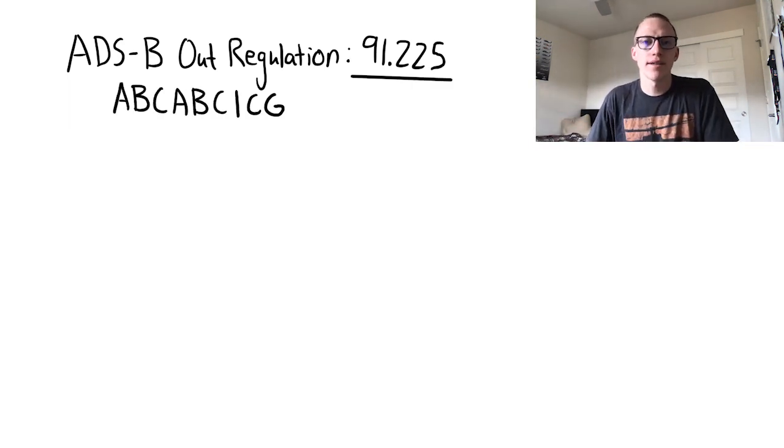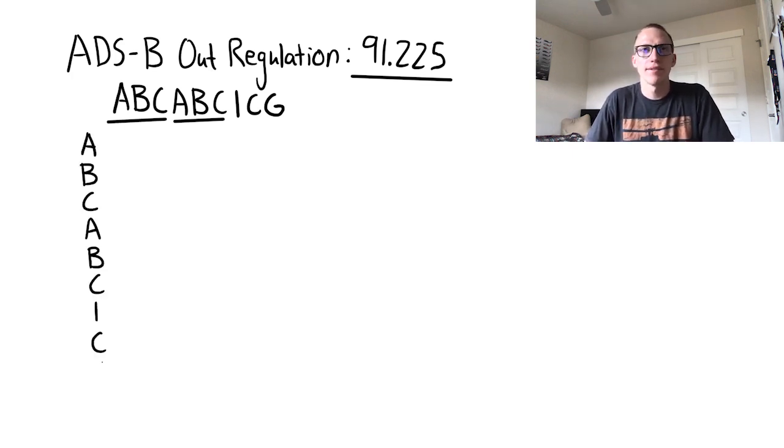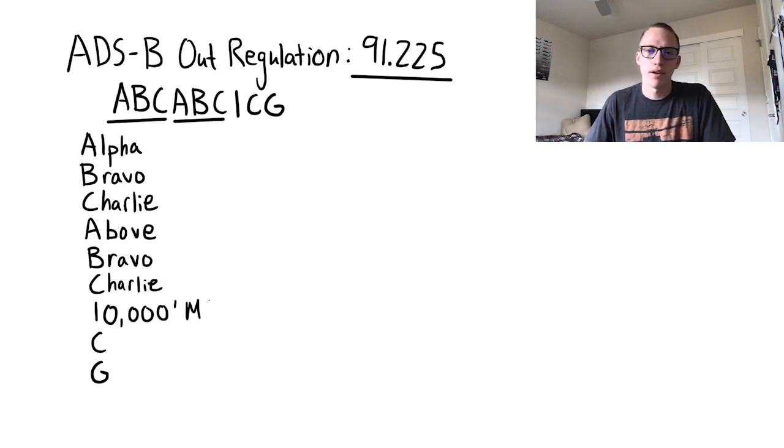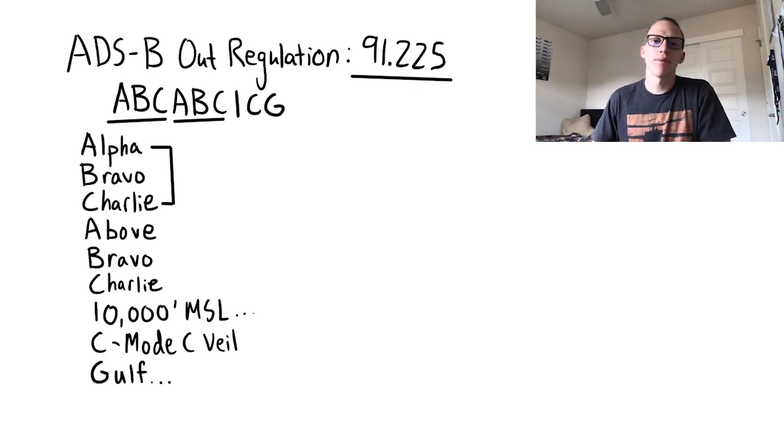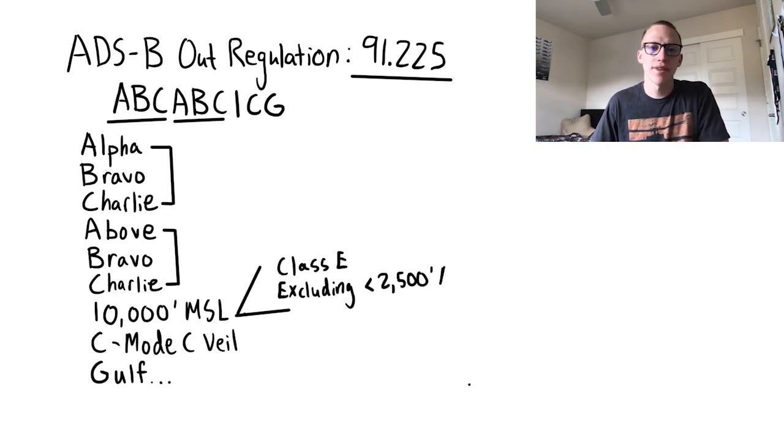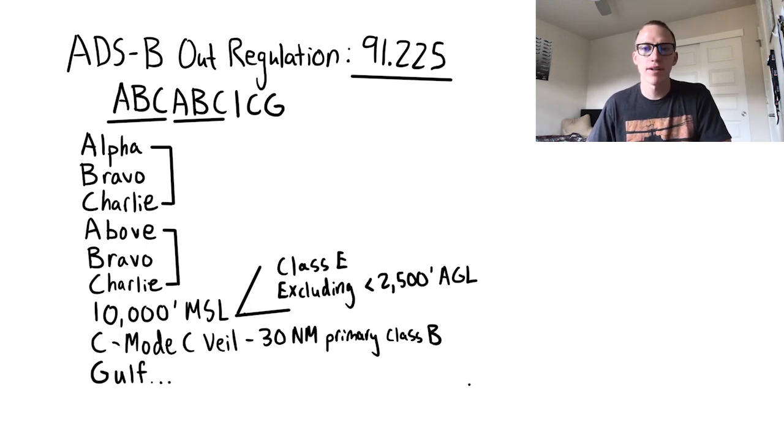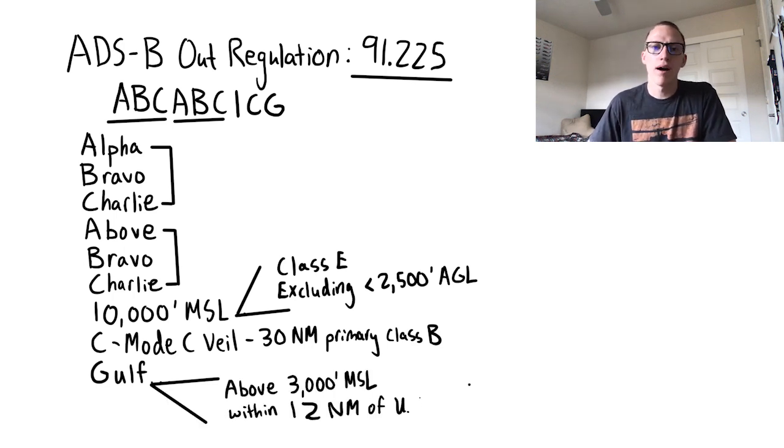The acronym I use to remember ADS-B out requirements is ABC ABC 1CG, which expands to Alpha Bravo Charlie, Above Bravo Charlie, 10,000 MSL, Mode C, Gulf. ADS-B out is required in Class Alpha, Bravo, and Charlie airspaces. It's also required above Class Bravo and Charlie airspace. It's required in Class Echo airspace above 10,000 MSL, excluding below 2,500 AGL. It's required within Mode C veils, which have a 30 nautical mile radius of primary Class Bravo airports. And lastly, it's required in Class Echo airspace over the Gulf of Mexico, above 3,000 MSL, and within 12 nautical miles of the U.S. coast.